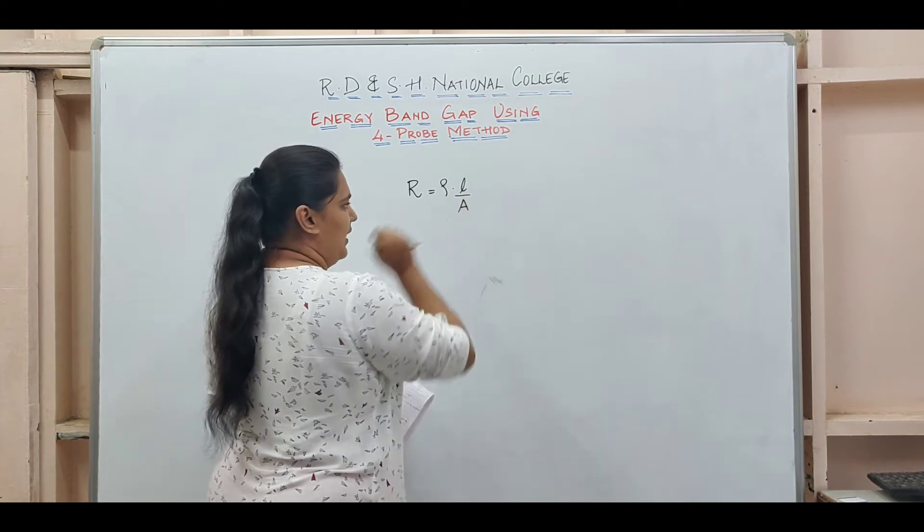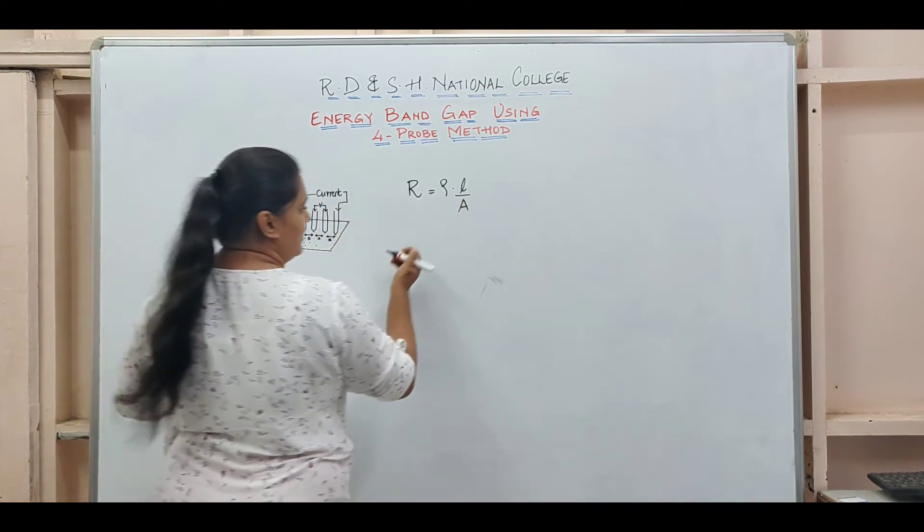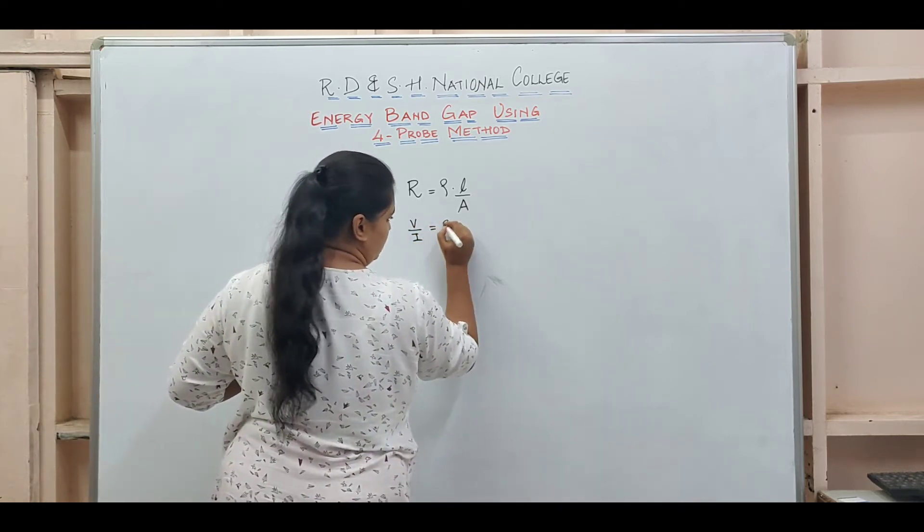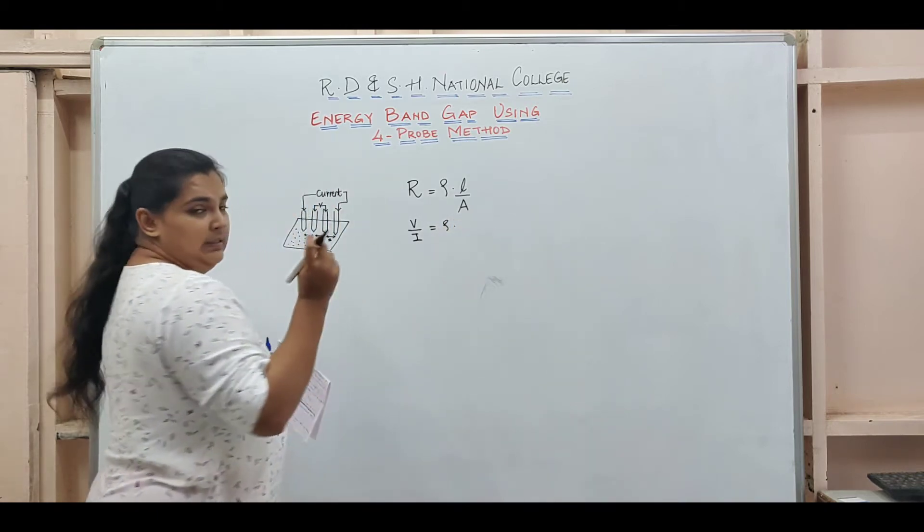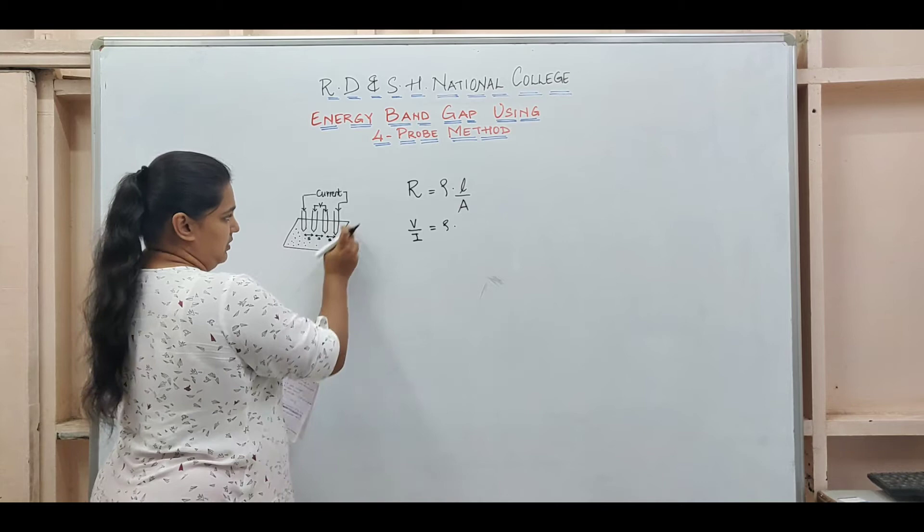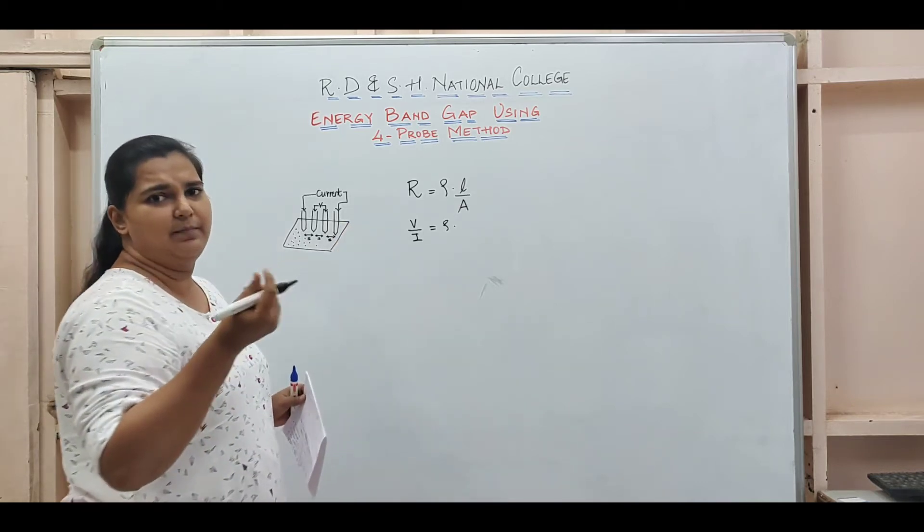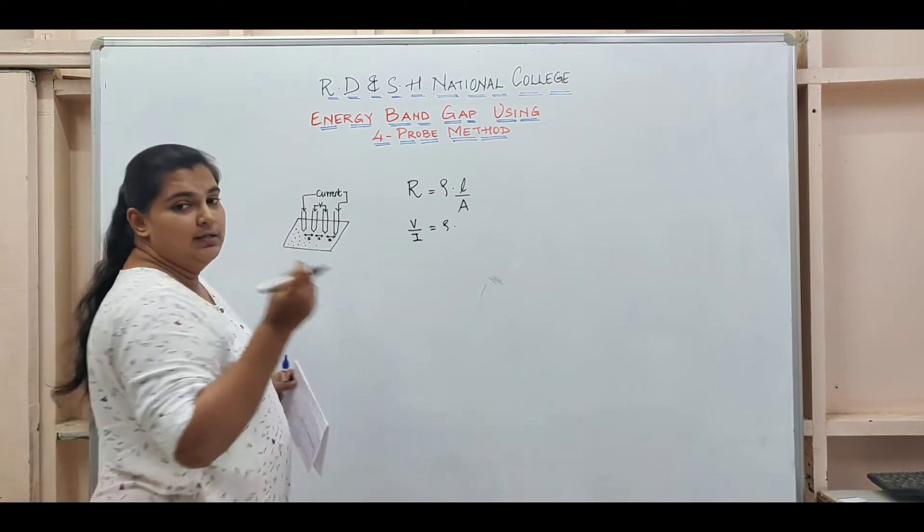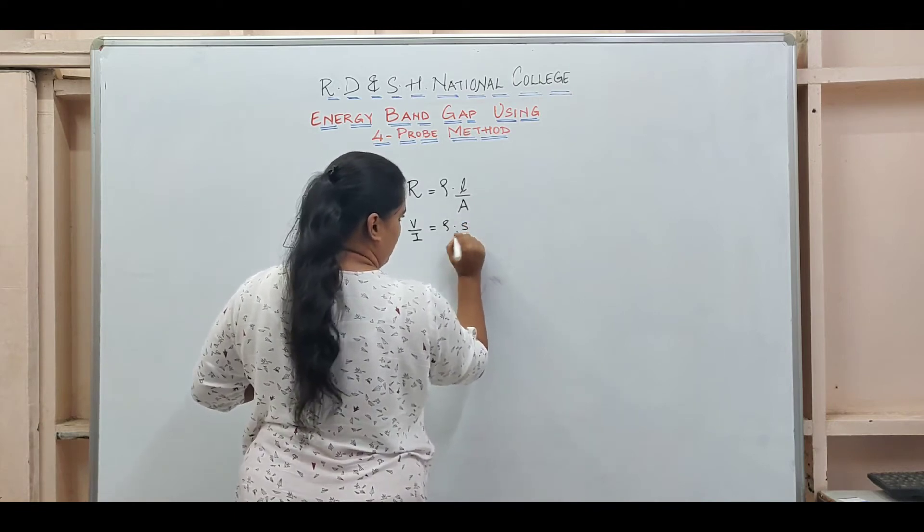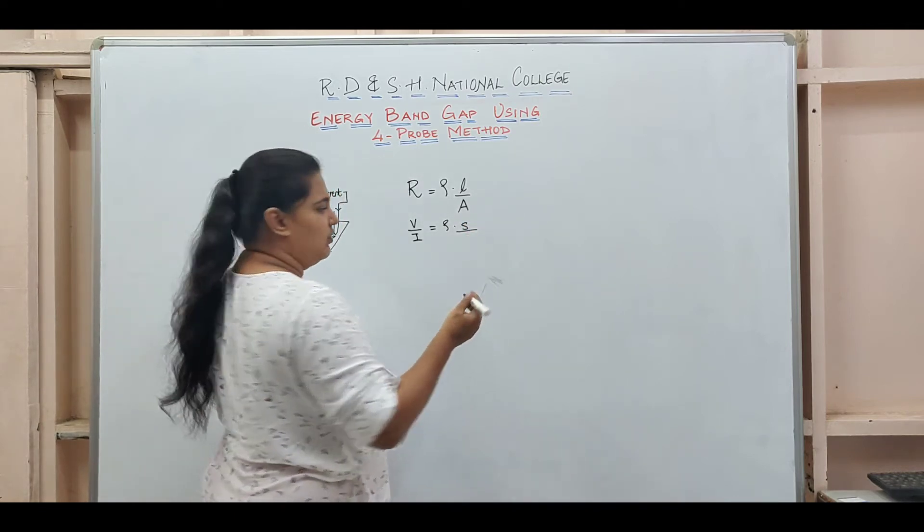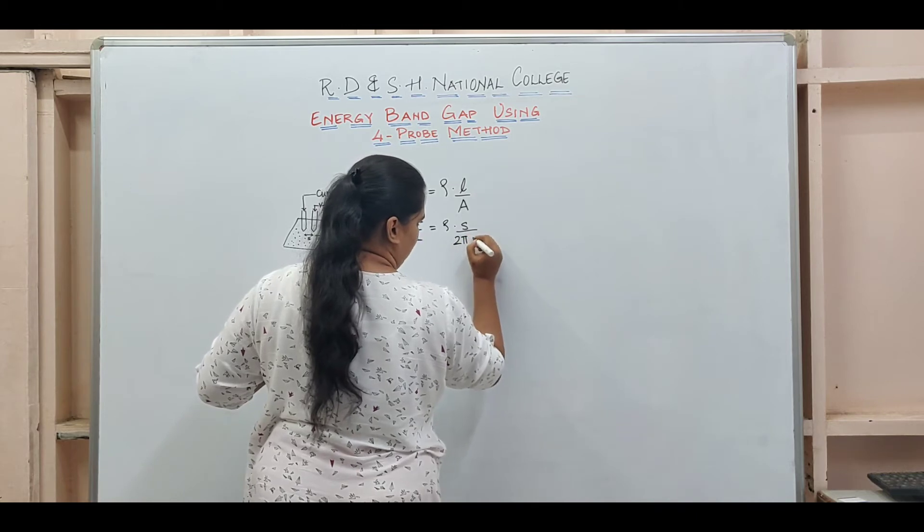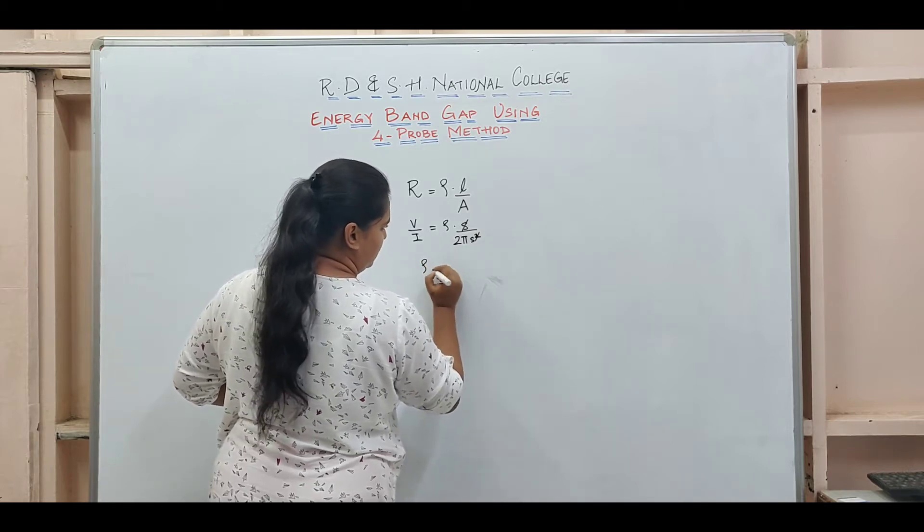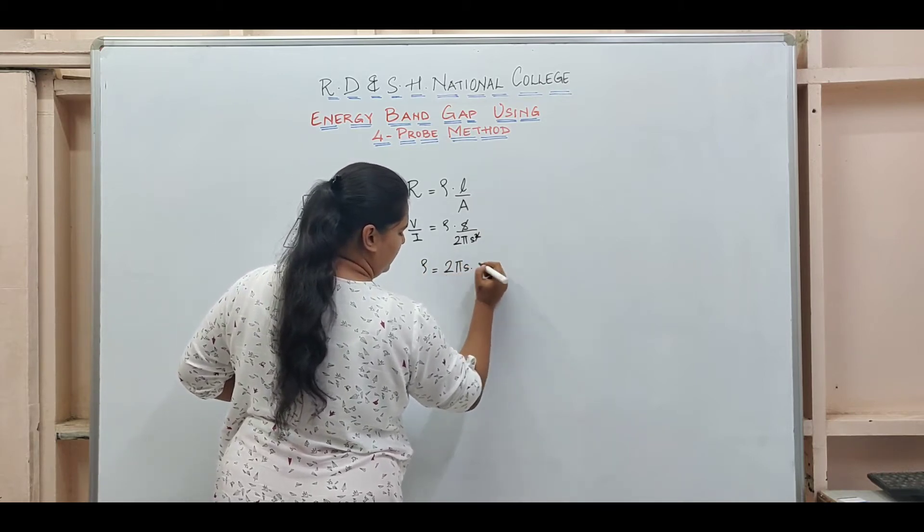So R is rho times L by A. Now you know R is V by I, Ohm's law. This length in our case, suppose the sample has side S, then area will be given as 2 pi S squared. This cancels out. So I get rho equals 2 pi S times V by I.